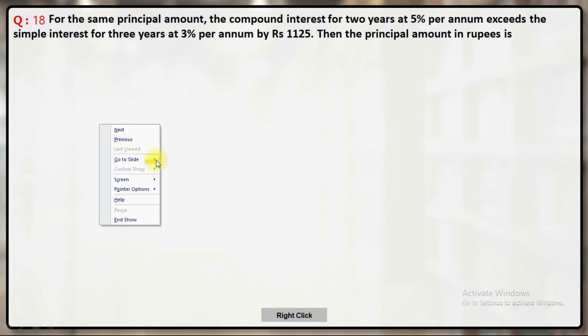What's given here: the difference between compound interest and simple interest is given. The compound interest for two years minus simple interest for three years. Let's say the principle is P, so the amount exactly after two years will